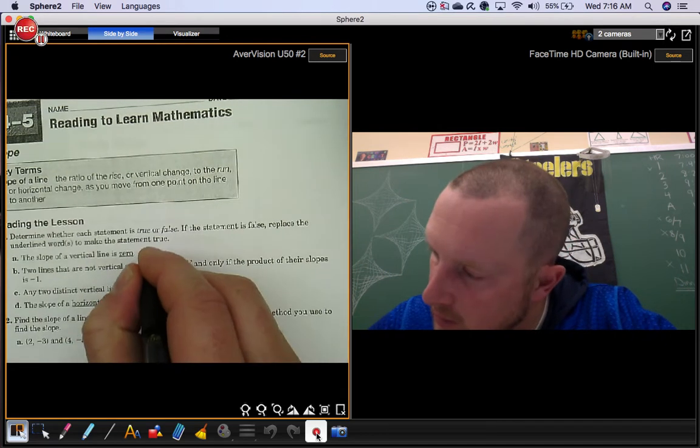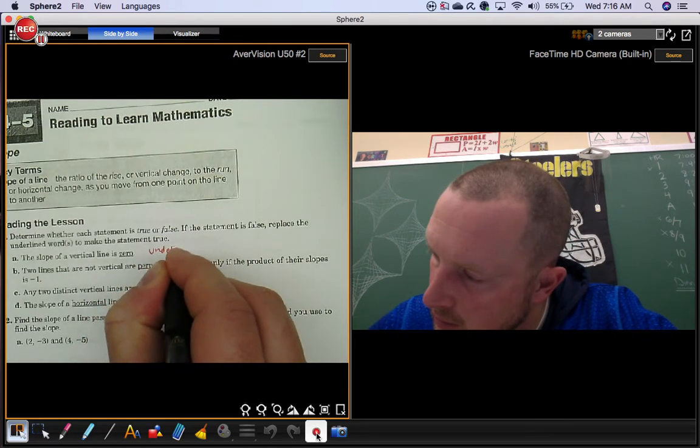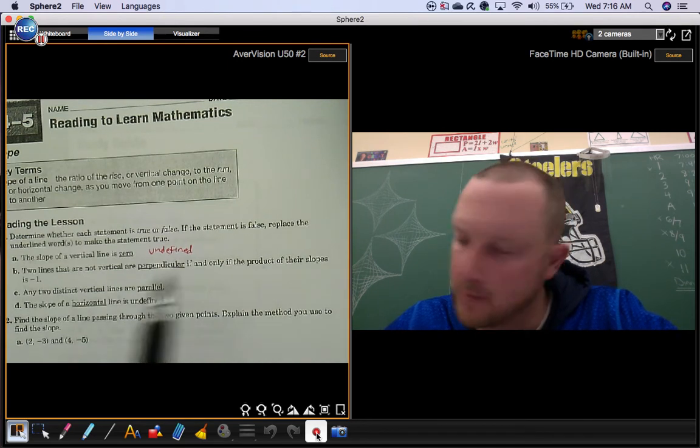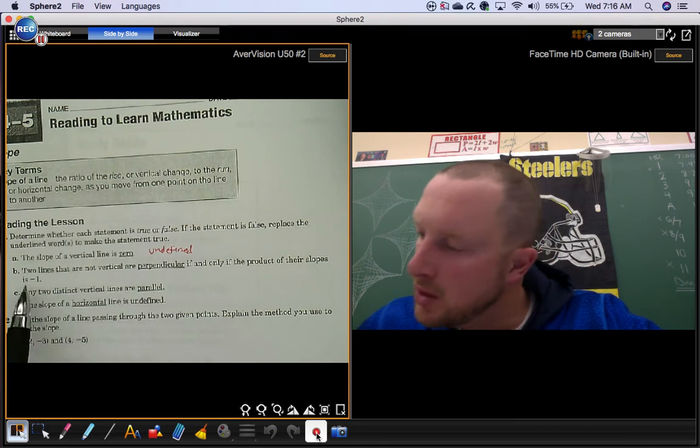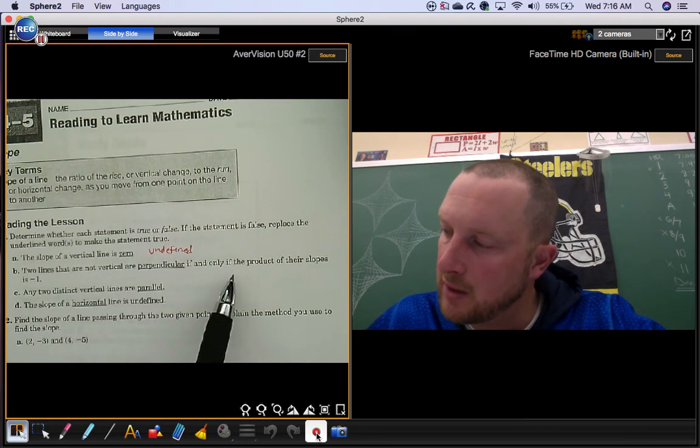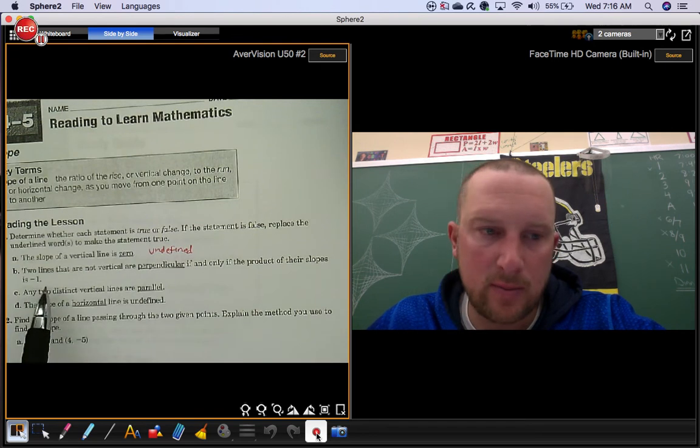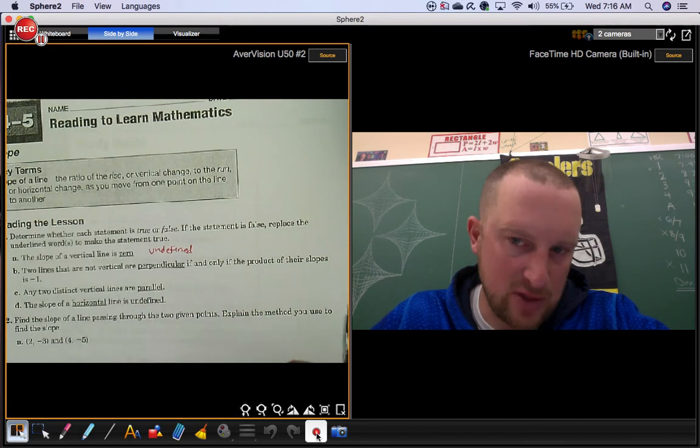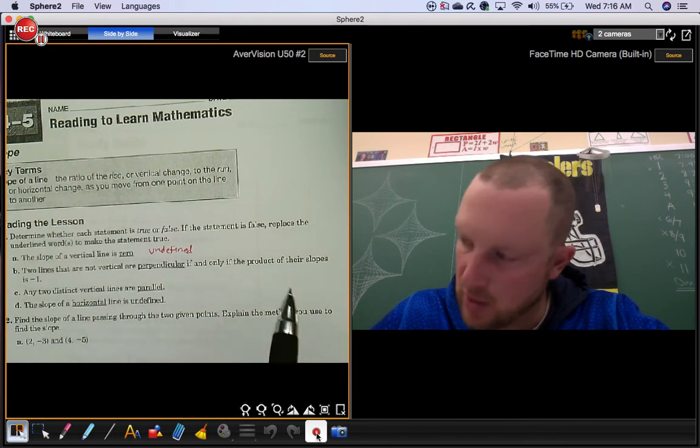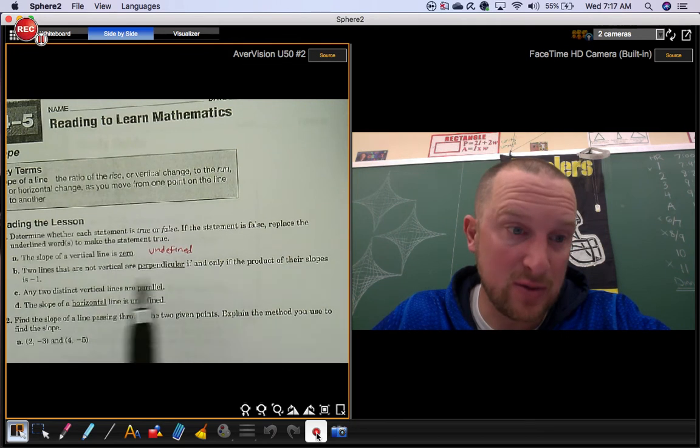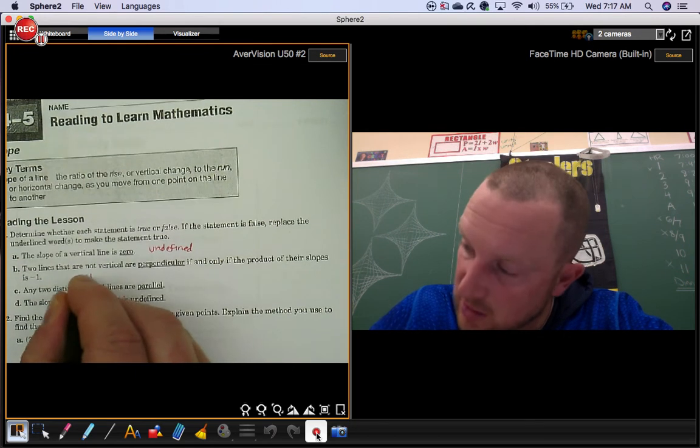Part B: Two lines that are not vertical are perpendicular if and only if the product of their slopes is negative one. We use the term opposite reciprocals, but if you look back in your notes, the product of opposite reciprocals is negative one. This is a true statement.